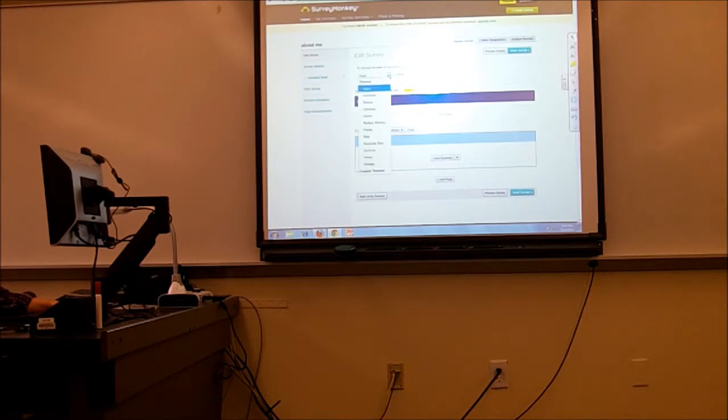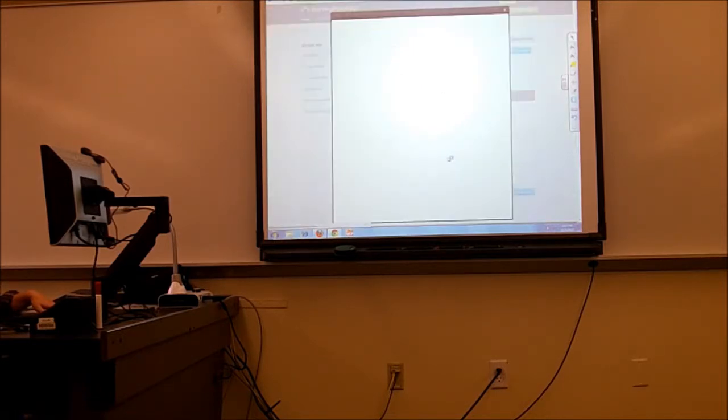This is where you make your survey. You can change the colors—it's not very creative, but it changes two bars. Then you go to 'Add Question.'